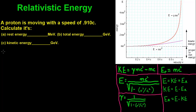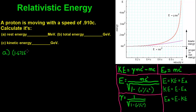We'll start with Part A and we are looking for its rest energy. Rest energy equals mc². We don't even need to know how fast it's going right now — this is the energy while it is at rest. So we take the mass, which is just the mass of a proton: 1.67265 times 10 to the negative 27th kilograms.